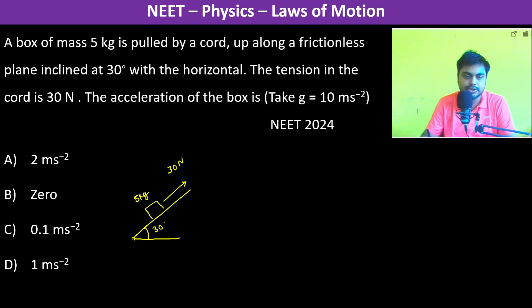T is equal to 30 Newtons. We have the downward force which is mg, and in this direction it is mg sin theta, and in this direction it is mg cos theta.